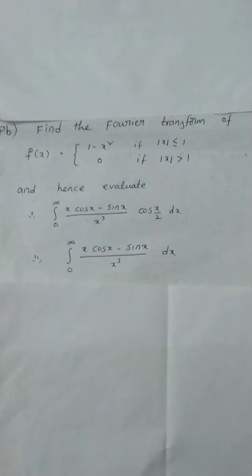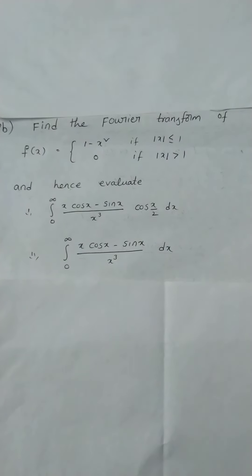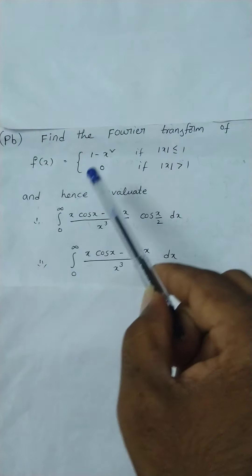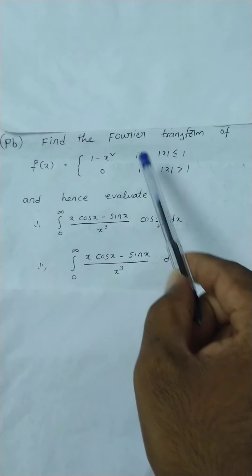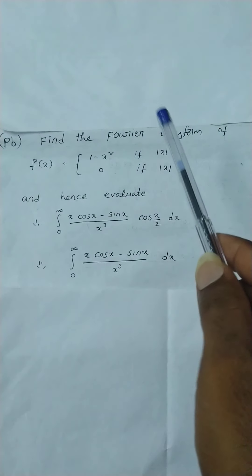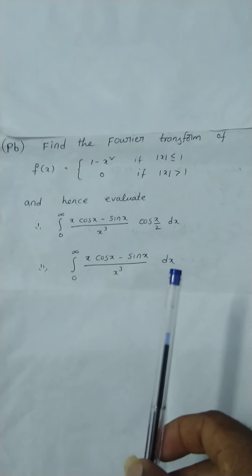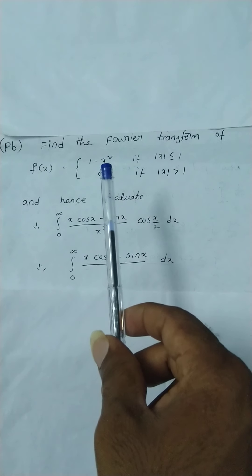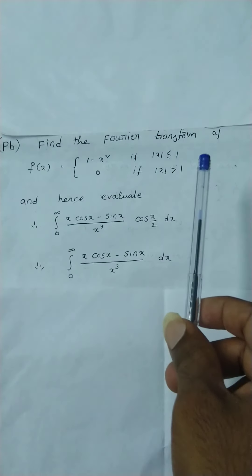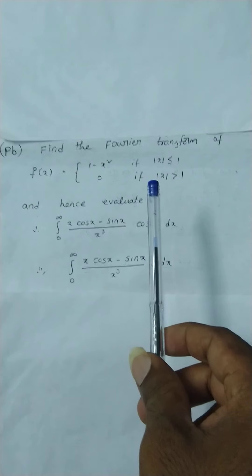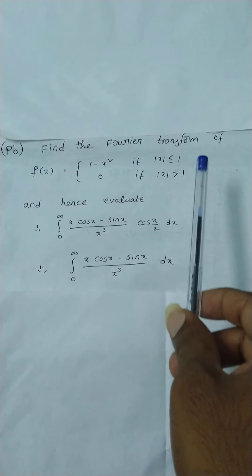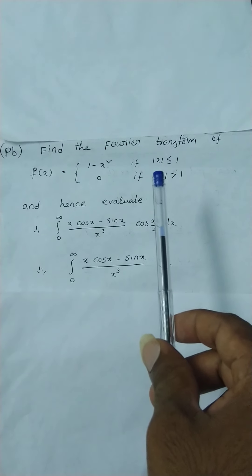In this lecture, I want to solve a problem. We have to find the Fourier transform for this function. After that, by using that, we have to evaluate two integral values. The given function is f(x) equal to 1 minus x squared if mod x is less than or equal to 1, and 0 if mod x is greater than 1. Before solving the problem, we have to understand the limits.